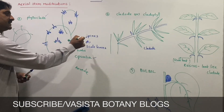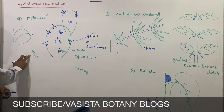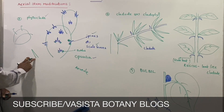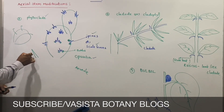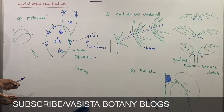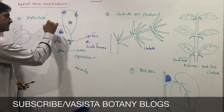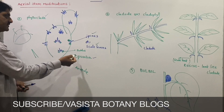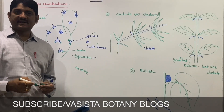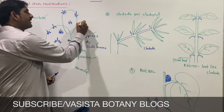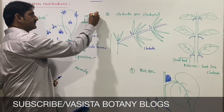Leaves are either modified into spines or scale leaves to reduce transpiration and minimize surface area. The stem modifies into a green aerial wing-like structure that performs photosynthesis. In Opuntia, there is a flattened phylloclade. In Euphorbia, a cylindrical phylloclade is present. In Casuarina, a needle-like phylloclade is present.